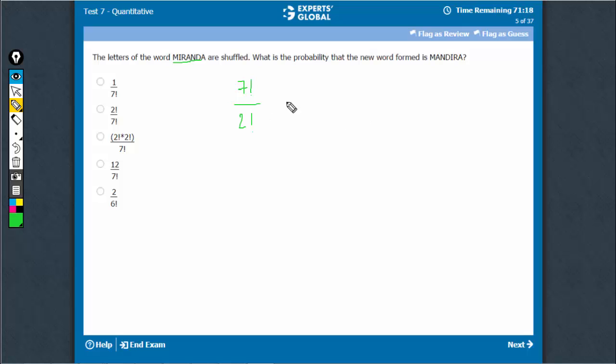The denominator would be 7 factorial upon 2 factorial. This is one peculiar case, only one way out of all of these ways.